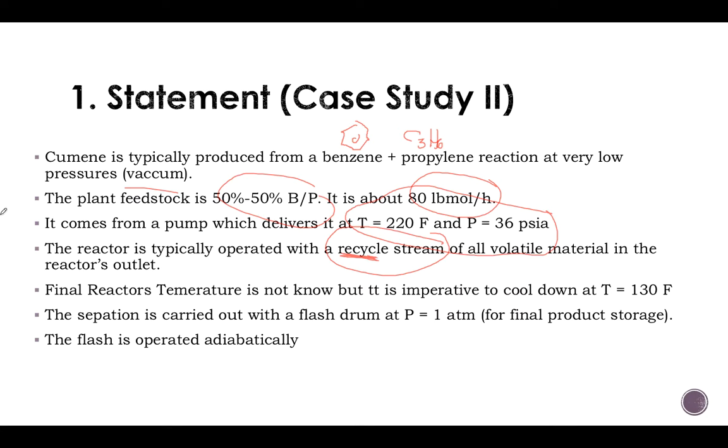The final reactor's temperature is not known, so we need to calculate that. Or actually, Aspen needs to calculate that. And then we need to cool it down to 130 Fahrenheit.